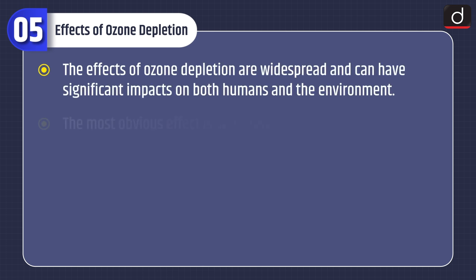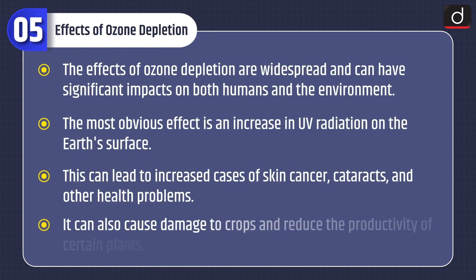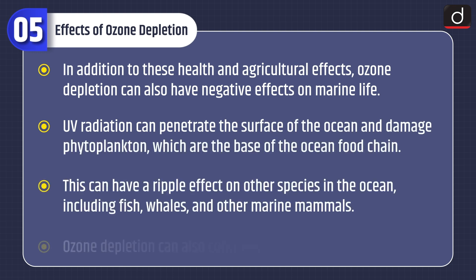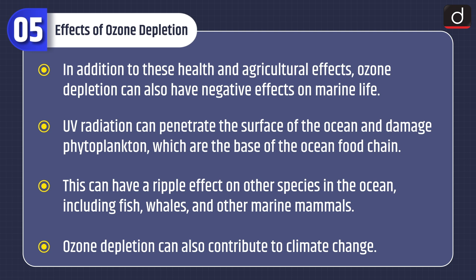The effects of ozone depletion are widespread and can have significant impacts on both humans and the environment. The most obvious effect is an increase in UV radiation on the Earth's surface, which can lead to increased cases of skin cancer, cataracts and other health problems. It can also cause damage to crops and reduce the productivity of certain plants. Ozone depletion can also have negative effects on marine life, as UV radiation can penetrate the surface of the ocean and damage phytoplankton, which are the base of the ocean food chain. This can have a ripple effect on other species including fish, whales and other marine mammals.